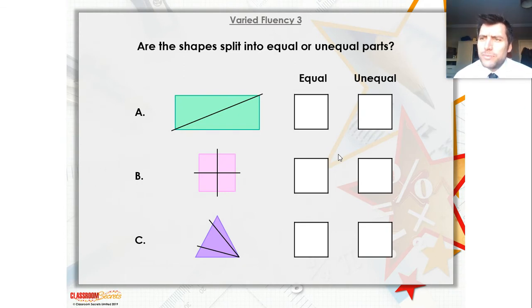Now, let's see. Are all these split into equal parts or not? Is my green rectangle split into two equal parts or not? Is my mauve square split into four equal parts or not? Is my purple triangle split into four equal parts or are they unequal parts? What do you think? A, is it equal or unequal? B, is it equal or unequal? And C, is it equal or unequal? Pause the video while you have a go at that, please.